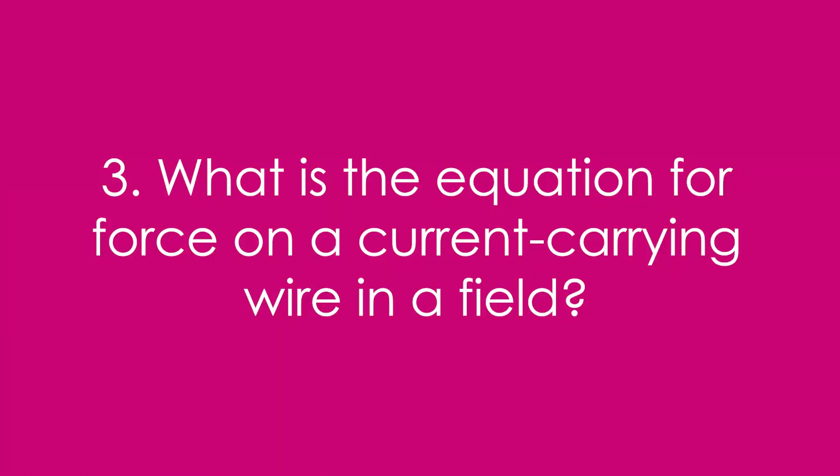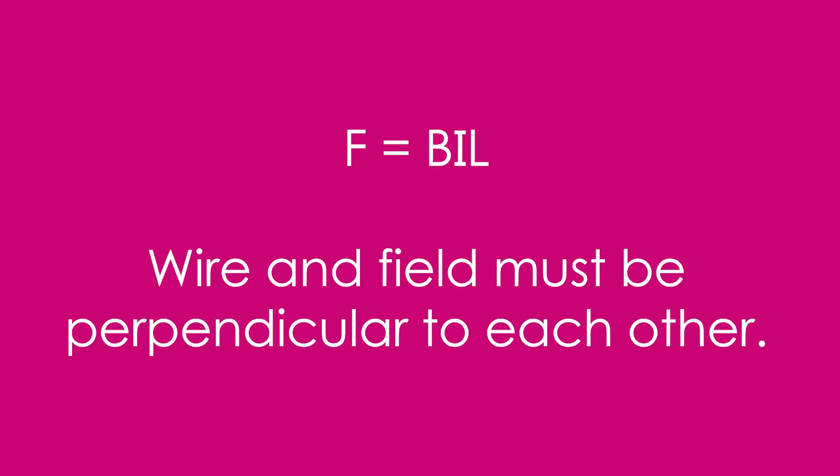Question 3: What is the equation for force on a current-carrying wire in a field? It's F = BIL — force equals flux density times current times length of the wire.